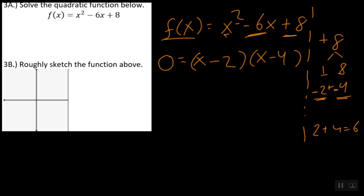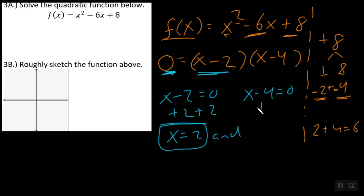Now, at this point, in order for this equation to equal 0, I have to set each factor equal to 0. And I simply solve for x. Plus 2, plus 2, and x equals 2 as one solution. And plus 4, plus 4, and x equals 4 is another solution. Or remember, our solutions can also be called x-intercepts.